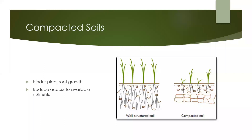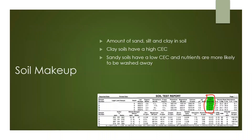Another issue affecting plant nutrition is compacted soils. They are of concern because they will hinder the plant's root growth, reducing its ability to access soil available nutrients, as illustrated in the picture. The last issue we'll mention is soil makeup — not talking about making the soil look pretty, but the relationship of the amount of sand, silt and clay in the soil, and how that affects nutrient availability.